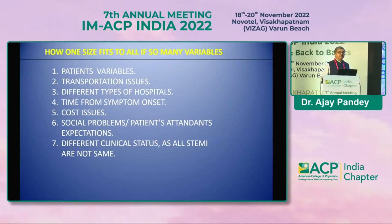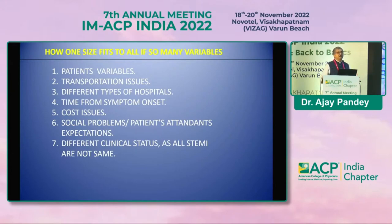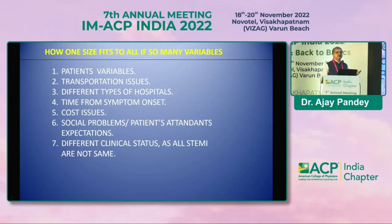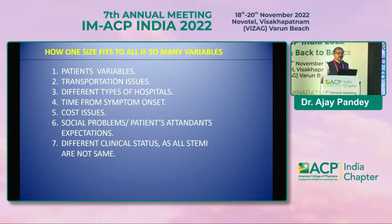Why can't one size fit all our STEMI patients? Because there are patient variables, different types of transportation issues — a major problem in our country — and different types of hospitals. Trials done in Tamil Nadu under the STEMI India program show that most hospitals are not PCI-capable at all times. Even those with PCI facilities can't do it 24/7. Time from symptom onset, when the patient reaches you, is critical. Cost is also a major issue.